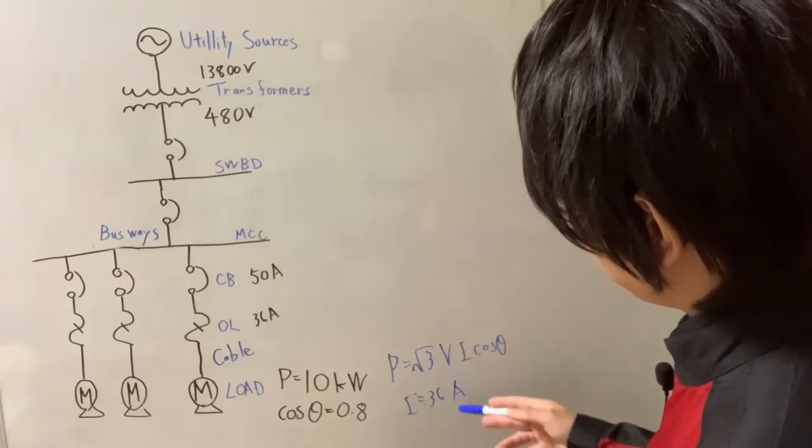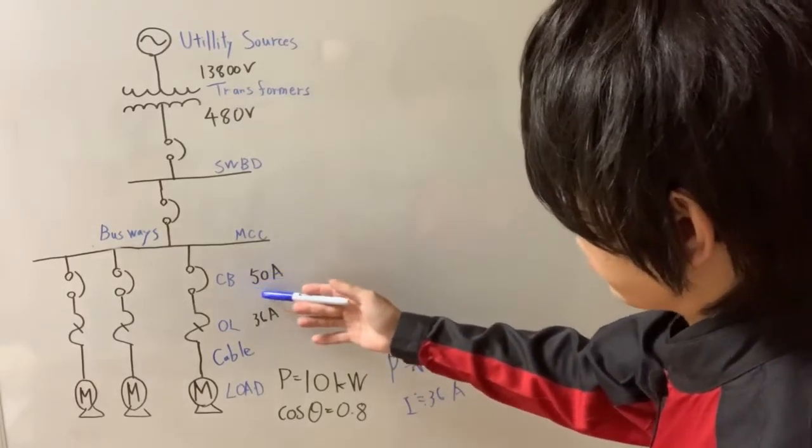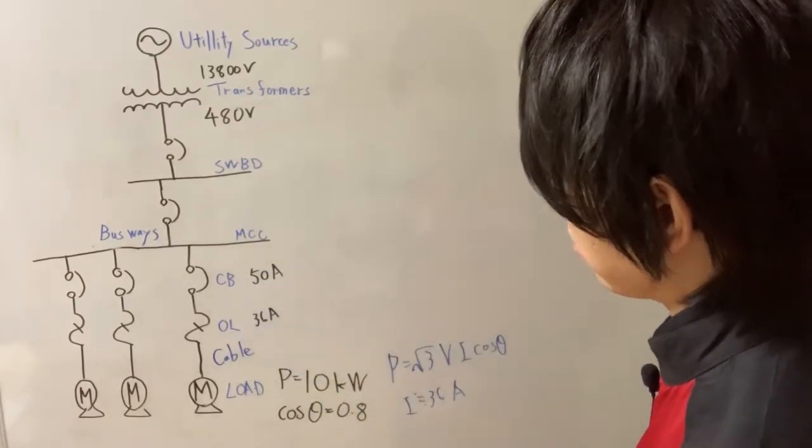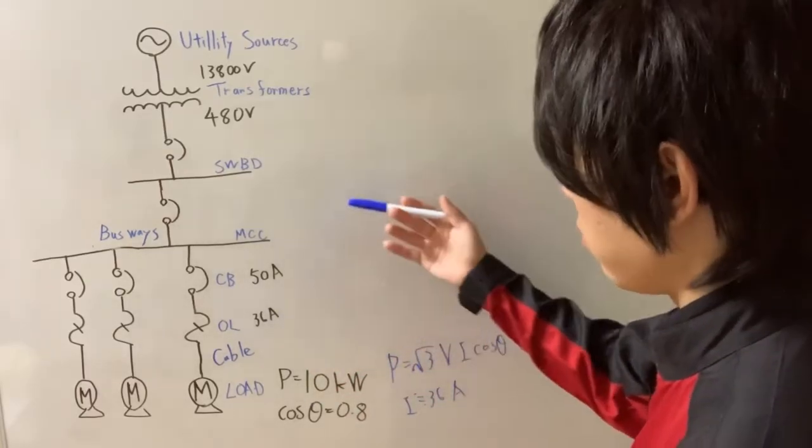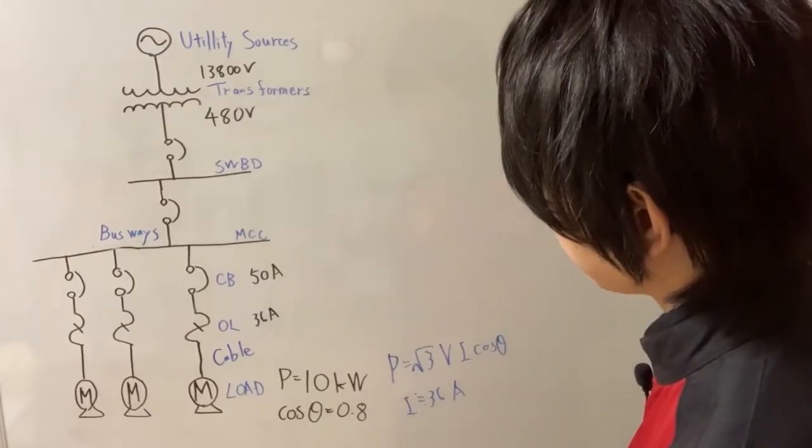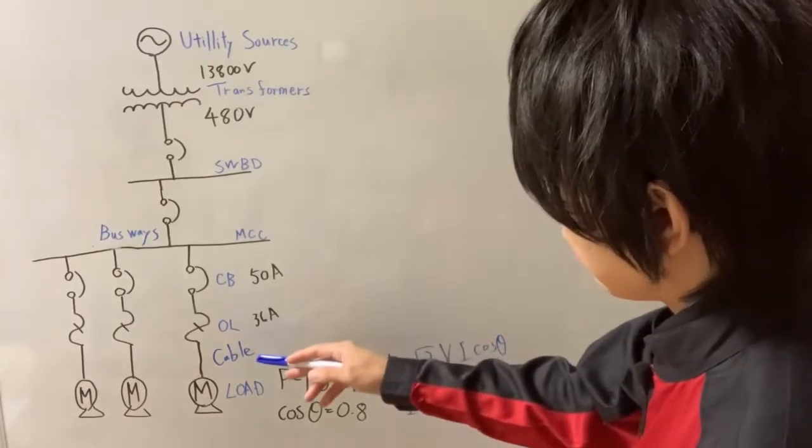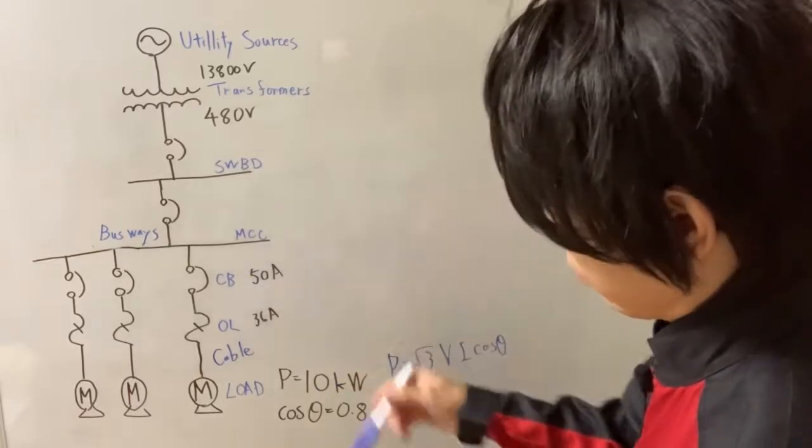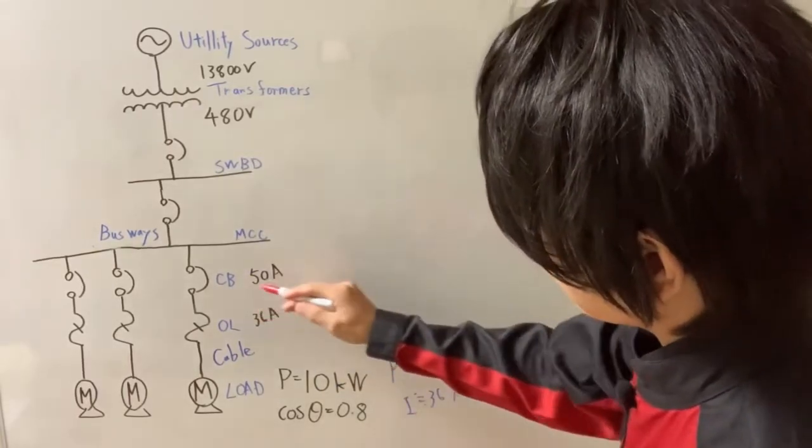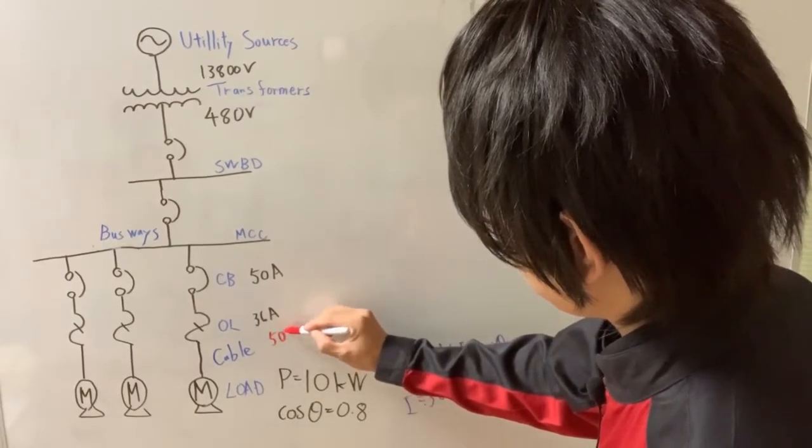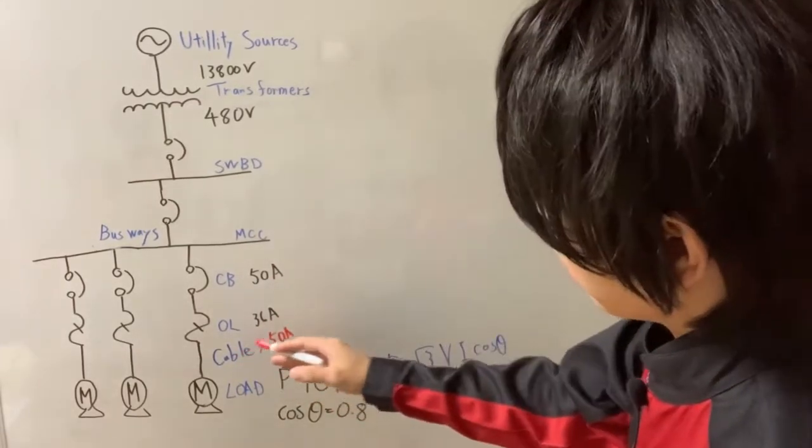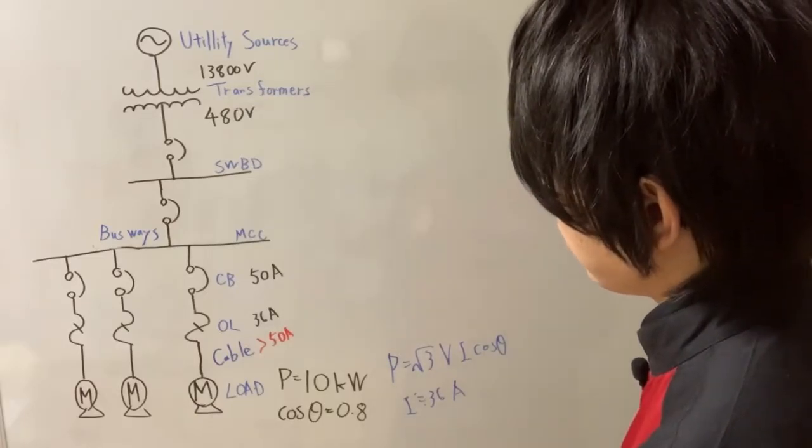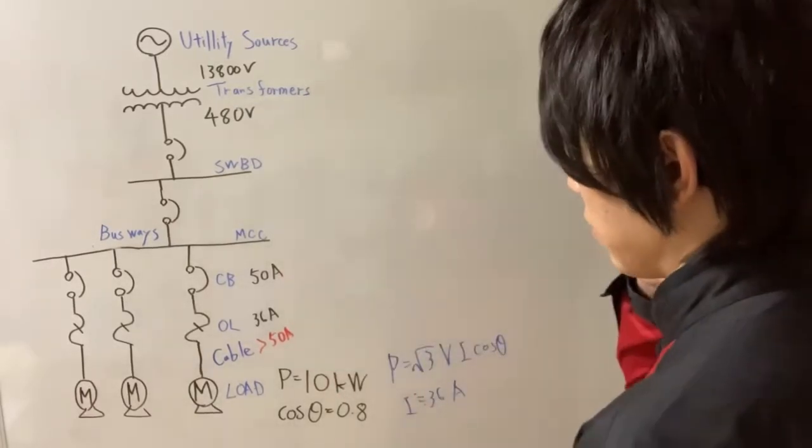That means the protection devices like breaker or relay should be selected as appropriate rating that relates to this maximum load current. So maybe a breaker's trip ampere is 50 ampere, for example, and overload relay setting value is just at 15 ampere or a little bit lower or a little bit higher. And the allowable current of the cable should be greater than 50 ampere because this is protection devices. So cable needs to be protected from some damage.